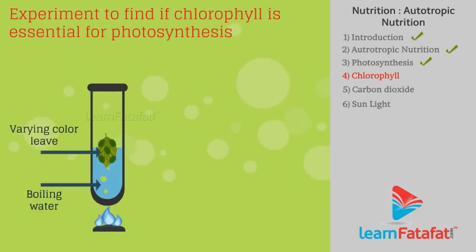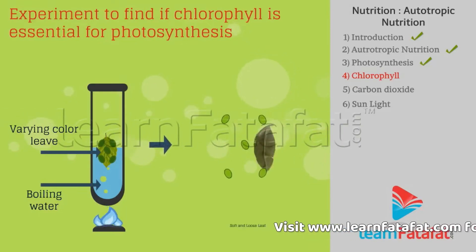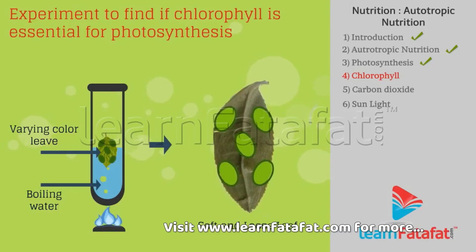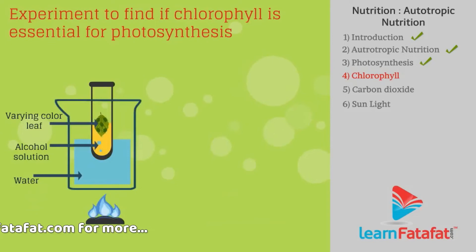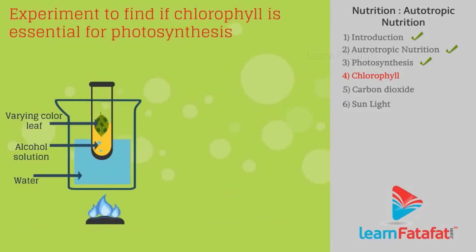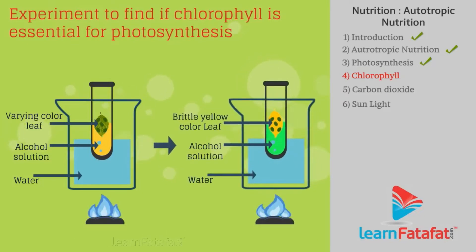Take a leaf of that plant which has varying color levels. Keep the leaf in boiling water for a few minutes so the leaf becomes soft and loose. Then immerse the leaf in alcohol and place the alcohol-containing beaker in a water bath and heat till the alcohol boils. The leaf becomes brittle and the color of the alcohol changes to pale green, while the color of the leaf changes to pale yellow.